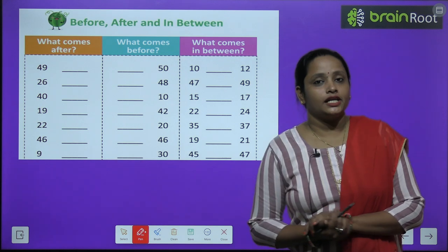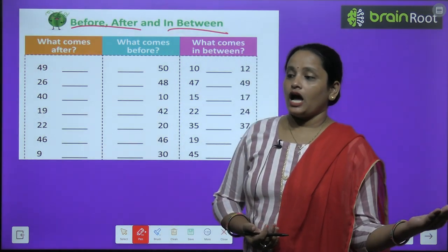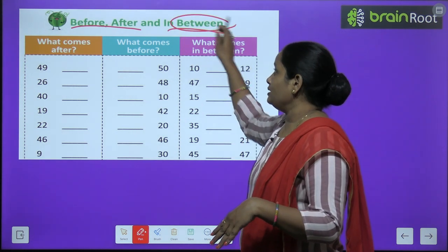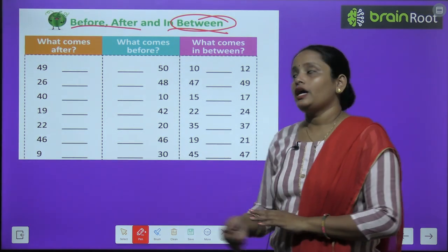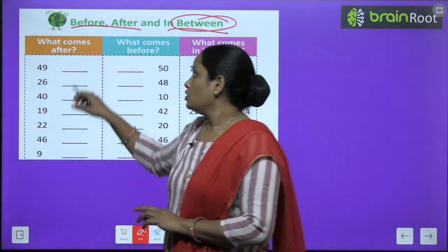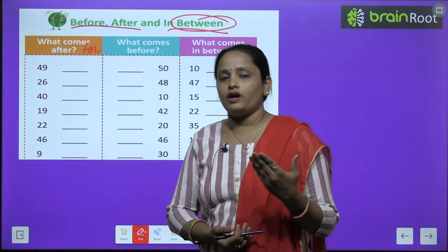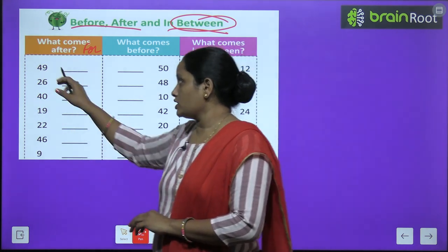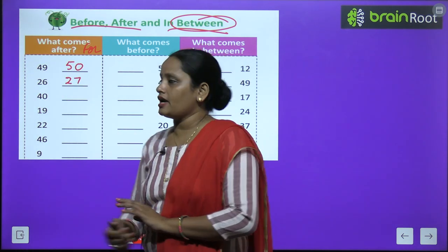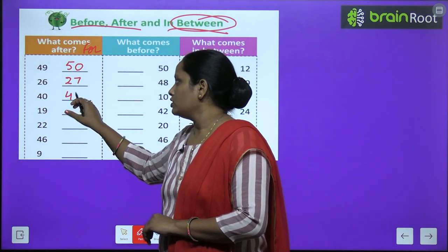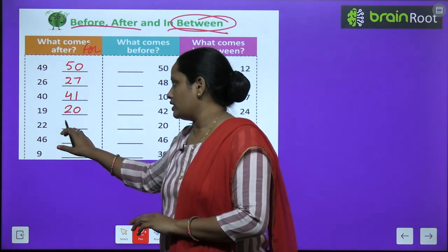Now children, after learning ascending and descending, let's learn before, after and in between. Before means pehle, after means baad mein, and between means beech mein. So what comes after, what comes before, and what comes between. After means forward counting karni hai. Jaise one ke baad two, four ke baad five, ten ke baad eleven. Toh jaldi se bataiye: forty-nine ke baad aata hai fifty. Twenty-six ke baad aata hai twenty-seven. Forty ke baad aata hai forty-one. Nineteen ke baad hai twenty. Twenty-two ke baad hai twenty-three.